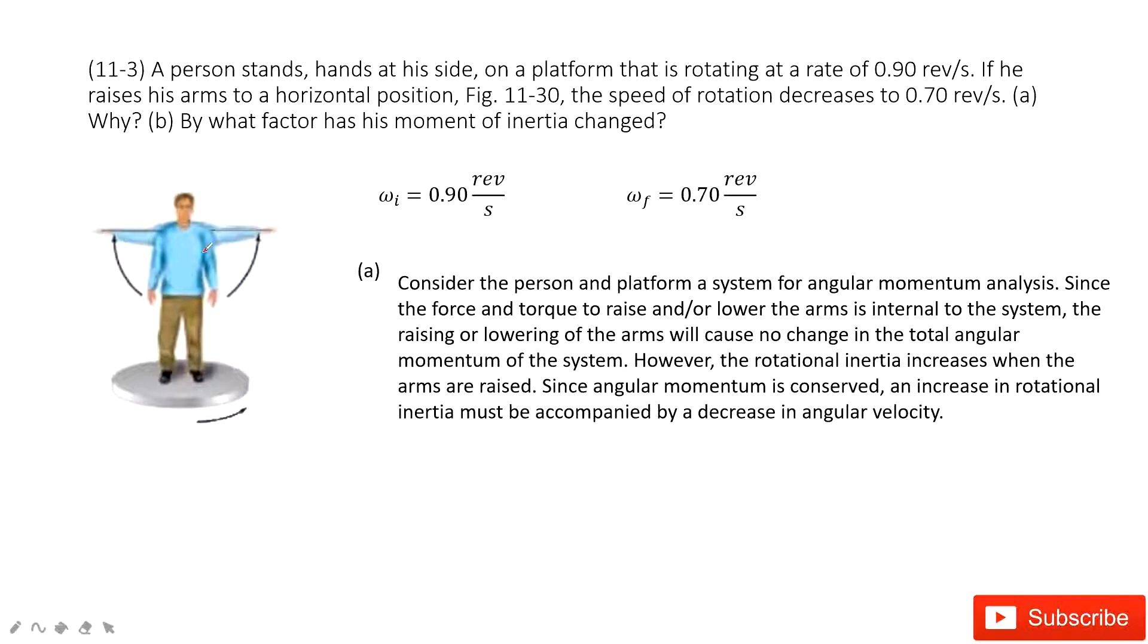In this system, we can see a person stand on a merry-go-round. The initial angular velocity and the final angular velocity is given. And this change is because this person raises his arms to horizontal positions. He just extends his body and makes the angular velocity change.